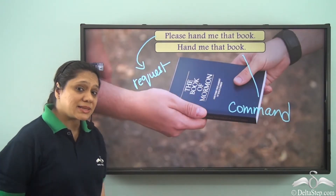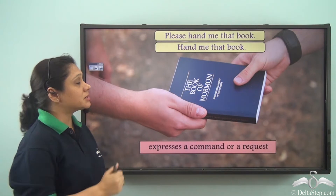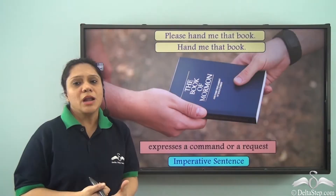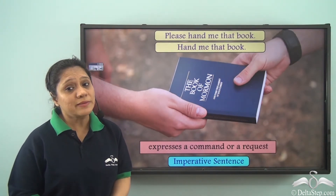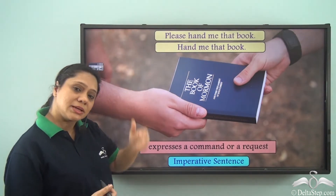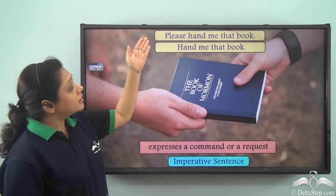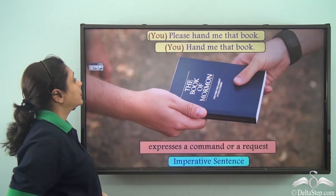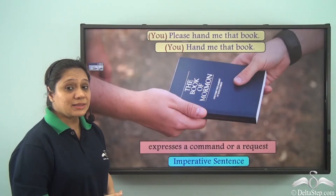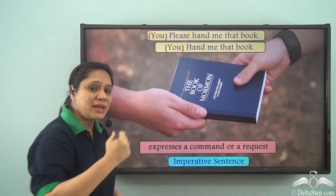So both these sentences, which either show a request or a command, are known as imperative sentences. Now you might wonder that a sentence always has a subject and a verb. But there is no subject in these two sentences, so why are they called sentences? In both these sentences, the subject 'you' is implied — it is not mentioned. When I say 'please hand me that book,' I actually mean 'you please hand me that book.'